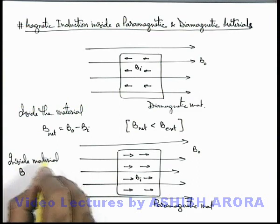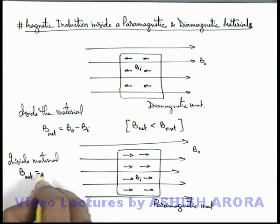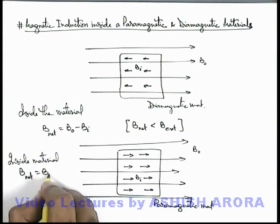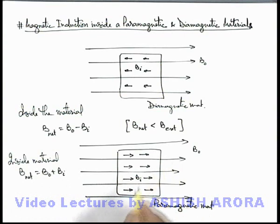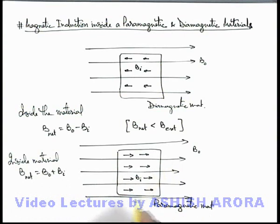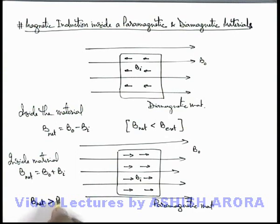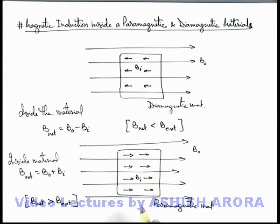So inside the material, the net magnetic induction will be B₀ plus Bᵢ, because Bᵢ is in the same direction. Therefore, the net magnetic field magnitude inside the paramagnetic material will be greater than the external magnetic field B₀.